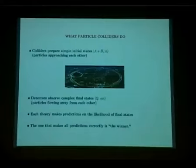What particle colliders do. They prepare simple initial states A plus B. The detectors observe complex final states, which I'll call F of Q. Each theory makes predictions on the likelihood of final states. Different predictions associated with different theories. The one that makes all the predictions correctly is the winner.